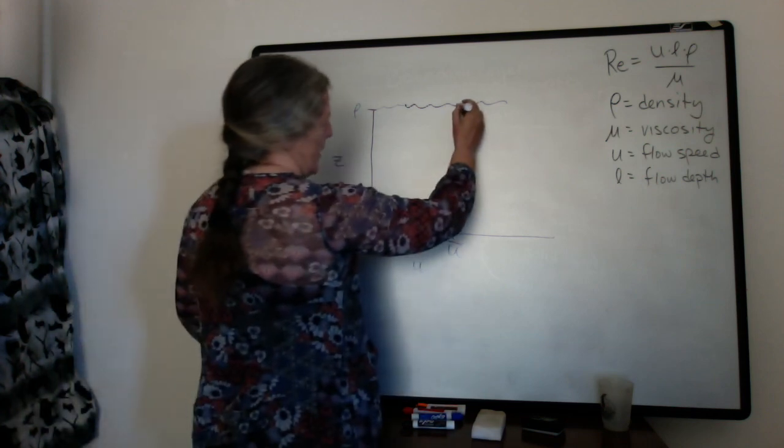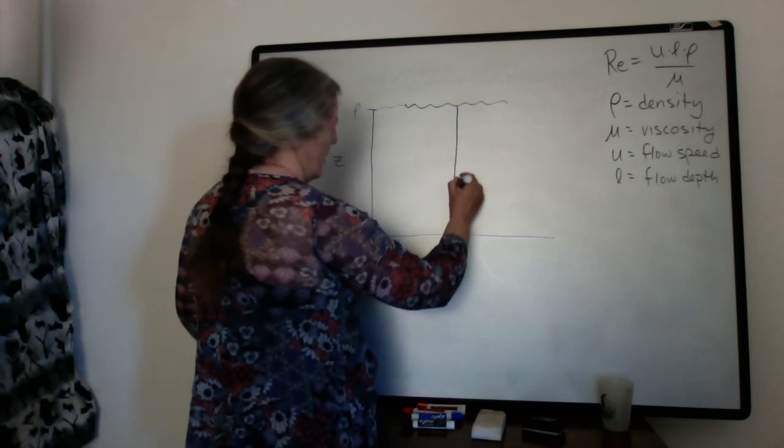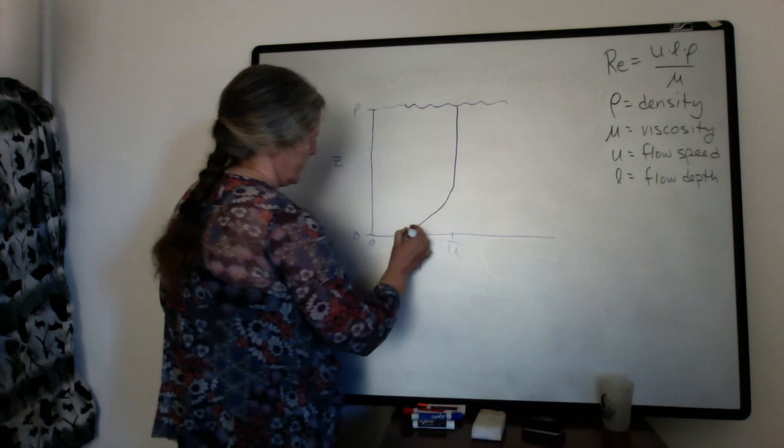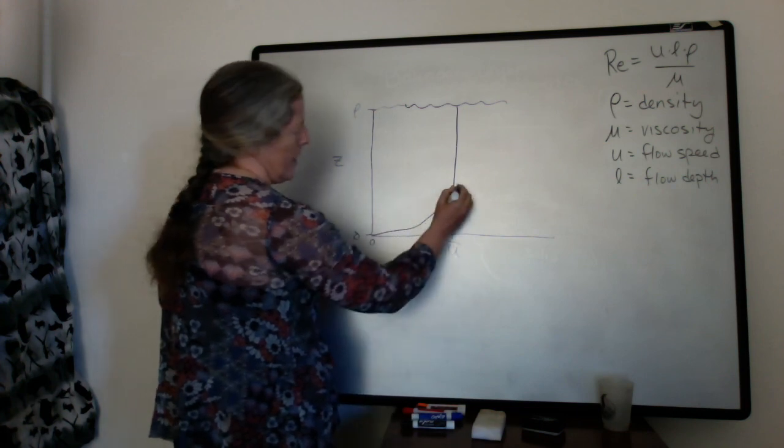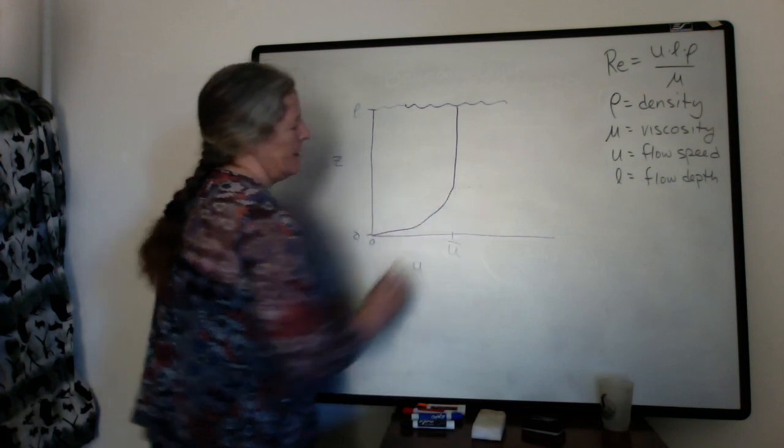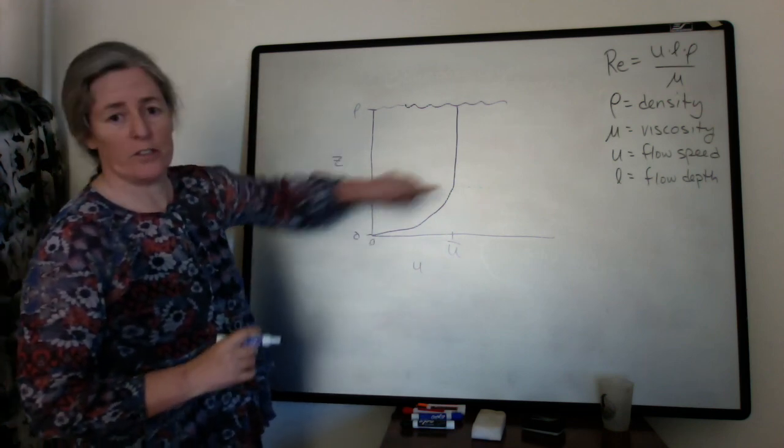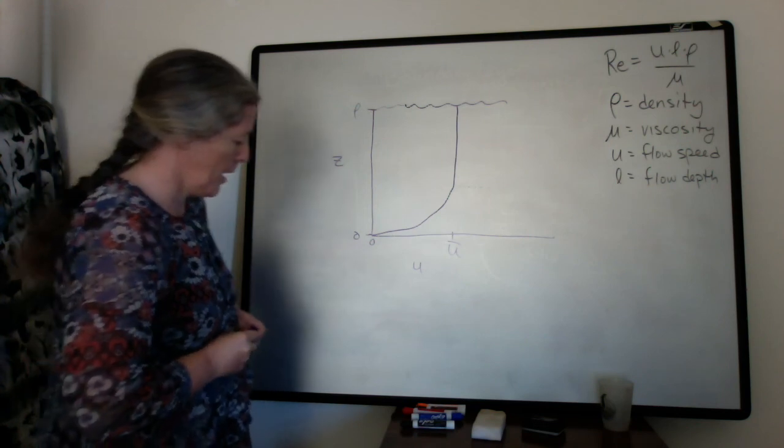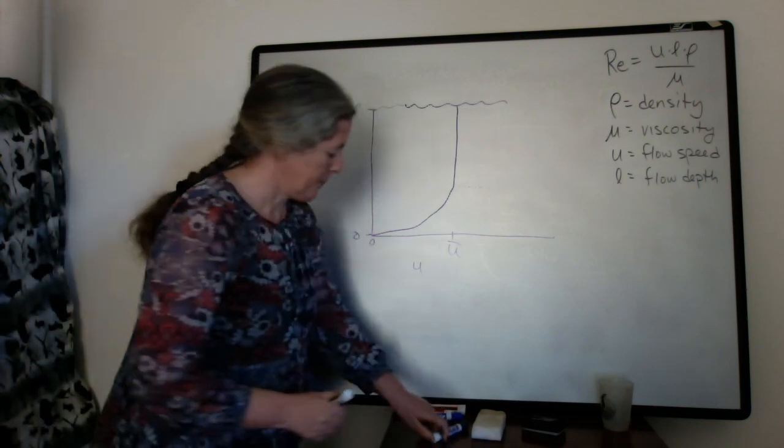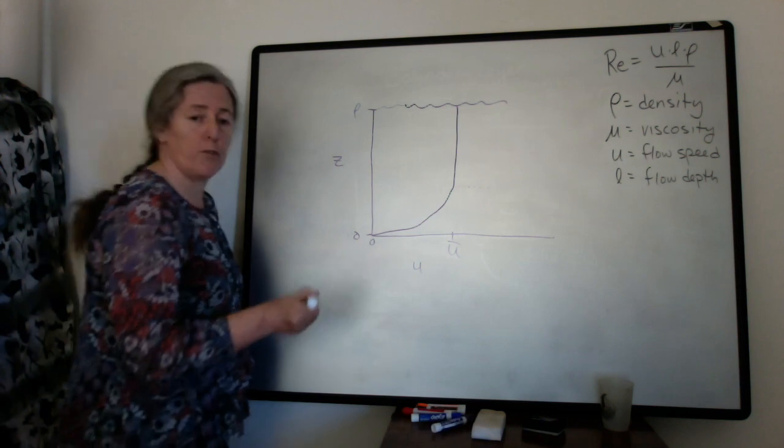We have our average flow speed coming down here. And we have our boundary layer in this zone where the friction with the base of the bed starts influencing the flow speed. So that is our graph from before.